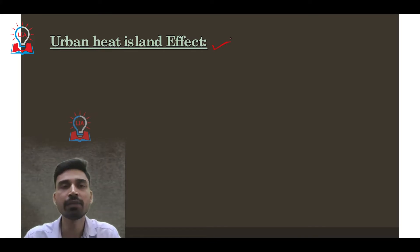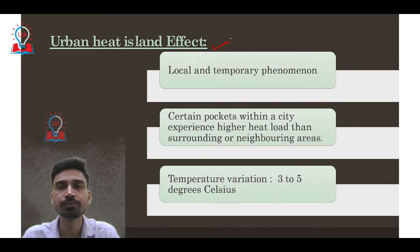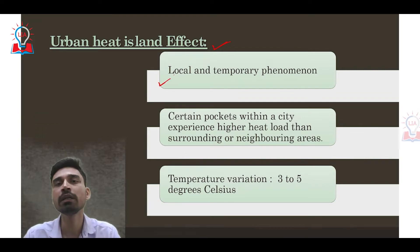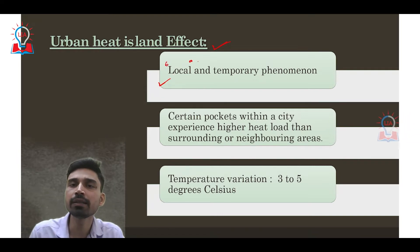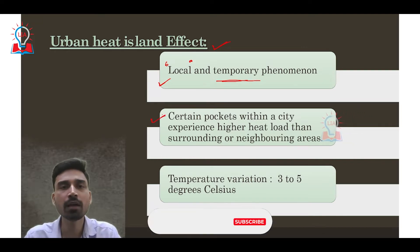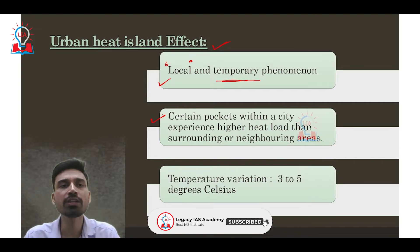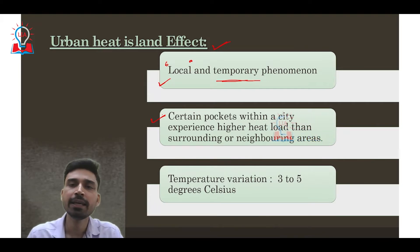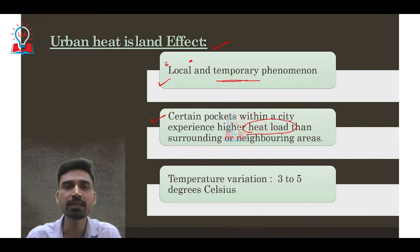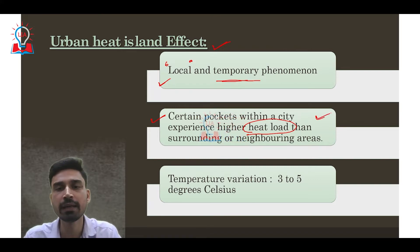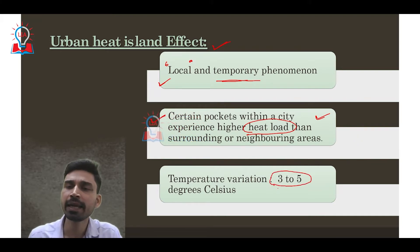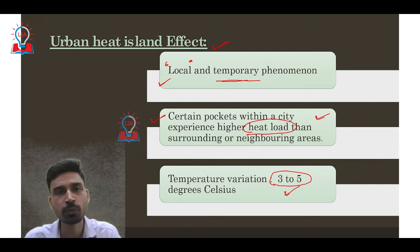Having discussed the heat wave, let us understand the urban heat island effect. First, the urban heat island effect is not observed over a very large area — it is quite a local and temporary phenomenon. It is defined as when certain pockets or areas of any metropolitan city experience a much higher heat load than surrounding or neighboring areas. The temperature variation between the heat island and adjoining areas can be in the range of three to five degrees Celsius.